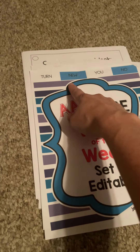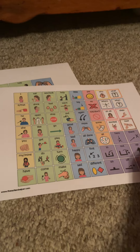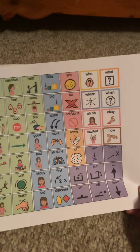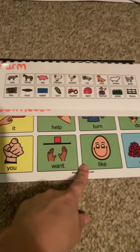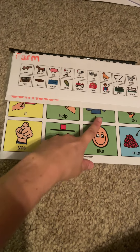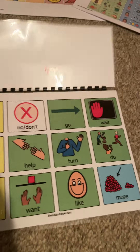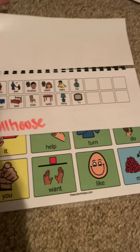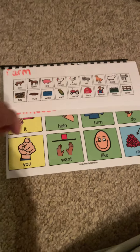This is a good editable core word of the week set from Speech Room News that we have, and there are four core words in this set. This is the Autism Helper core board — this is the bigger one, and this is the smaller one, which is the one I am using. This one has 'turn' on it. These are the core boards — it's the small core board, and I have two fringe vocabularies on top: one for farm and one for dollhouse.